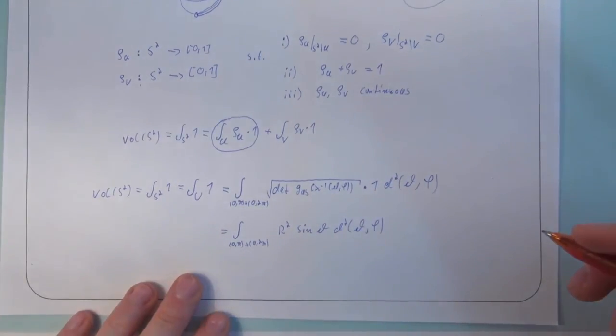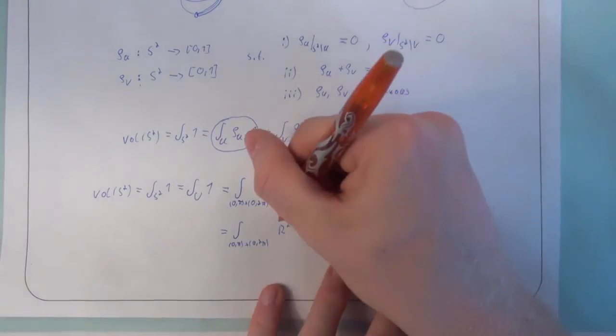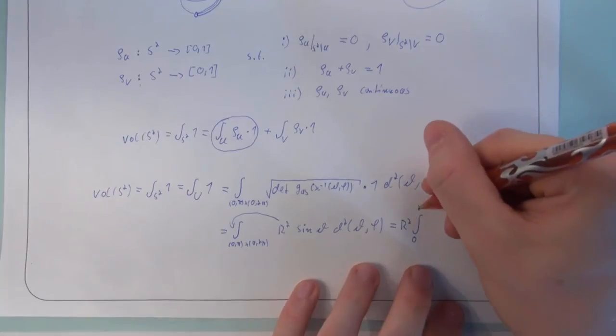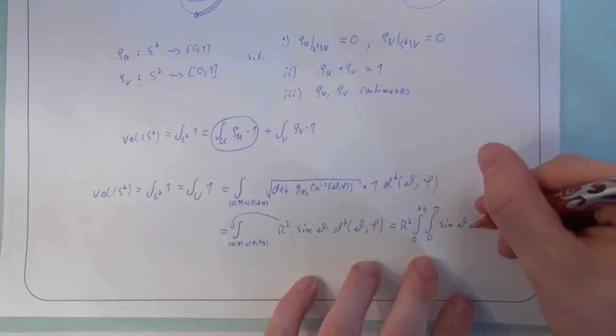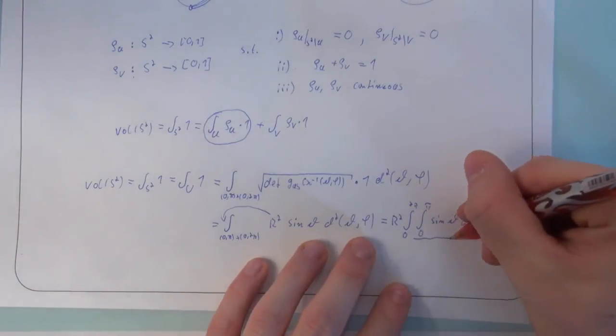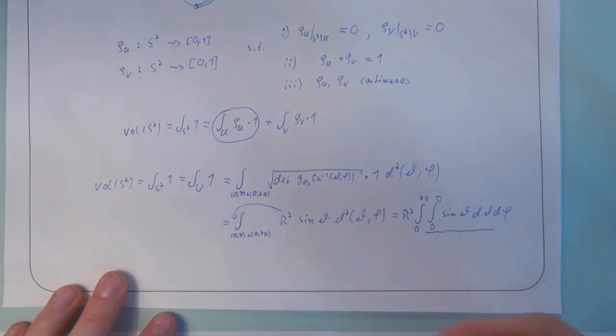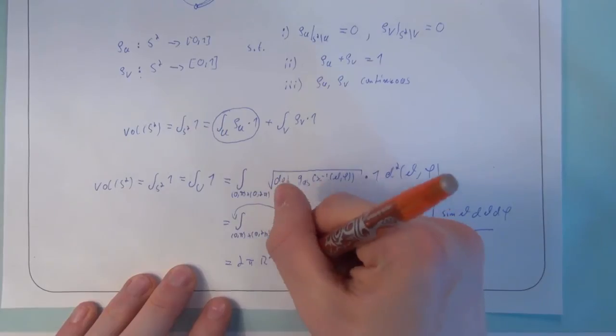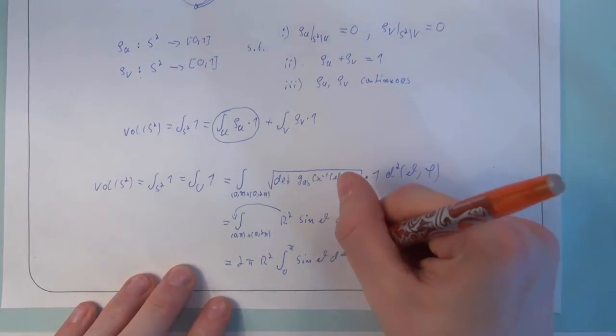We get the integral 0 pi times 0 2 pi of r squared sin of theta. Integrating two dimensions, theta and phi. Employing the theorem of Fubini and pulling this factor out, we can write this as r squared integral from 0 to 2 pi integral from 0 to pi of sin theta d theta d phi. This function here does not depend on phi, so we can just carry out the phi integration and get a factor 2 pi. So, we have 2 pi r squared, the integral from 0 to pi of sin theta d theta.